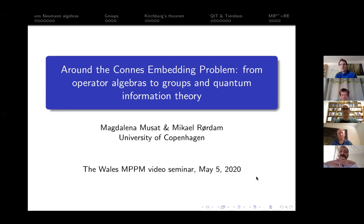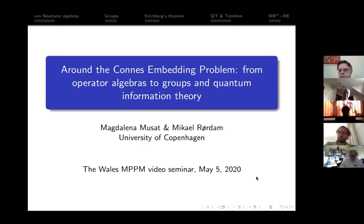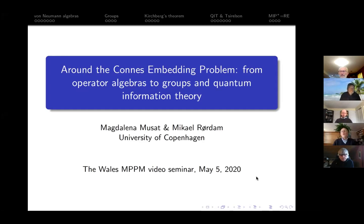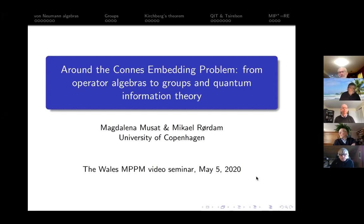What I want to tell you about is the Connes embedding problem from its birth in 1976, and I will briefly touch upon the most recent development that has given renewed interest in this problem — namely the paper by Zhengfeng Ji, Anand Natarajan, Thomas Vidick, John Wright, and Henry Yuen, who put on the archive in January the proof that MIP* equals RE, which as a consequence shows that the Connes embedding problem has a negative answer. This is a very massive paper and achievement currently being absorbed by the community, and I will only very briefly address its content toward the end. Zhengfeng Ji will give a lecture in this very seminar next month.